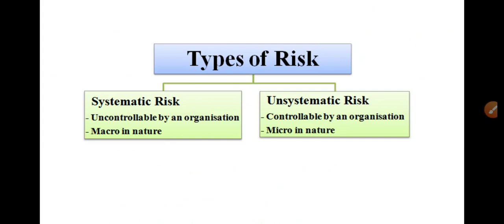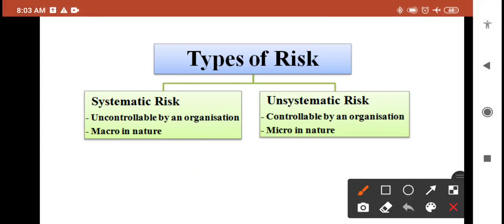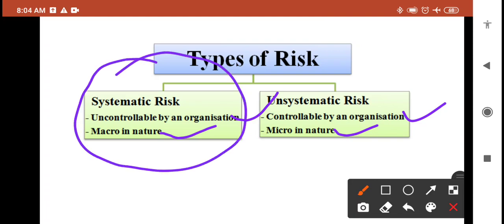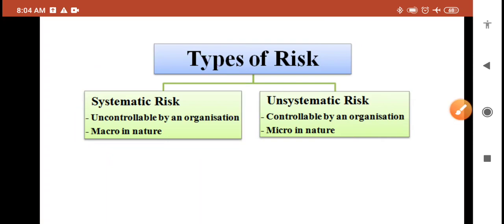Under risk, we have majorly two kinds. One is systematic risk and another one is unsystematic risk. Systematic risk means uncontrollable by an organization, which is macro in nature. Unsystematic risk is controllable by an organization and micro in nature. In this video, I am only concentrating on systematic risk — what it is, and the different types that come under systematic risk.